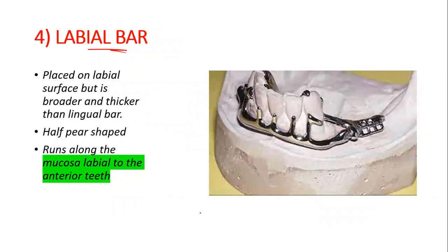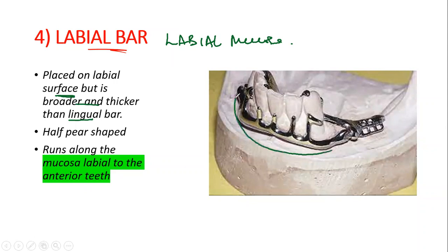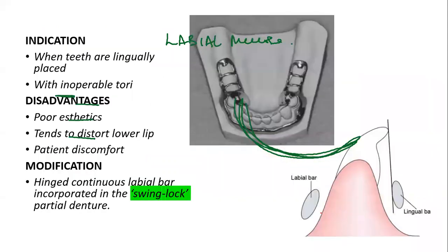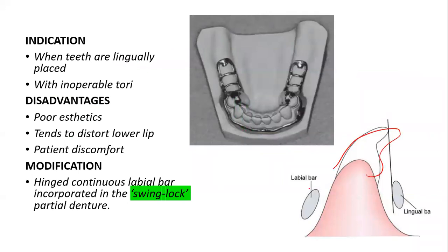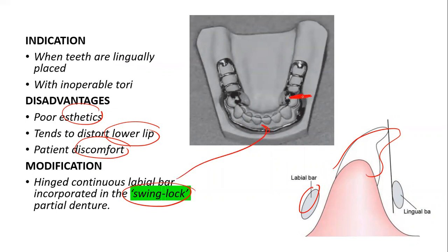The final connector is the labial bar. Unlike the others, it is placed on the labial mucosa — on the labial surface — and is broader and thicker than the lingual bar to maintain rigidity due to the greater external curvature. It is also half pear-shaped in cross-section and runs labial to the anterior teeth. It is indicated when the teeth are very much lingually placed. The problems are that it distorts the lower lip, is uncomfortable for the patient, and has poor aesthetics. A modification is the swing lock denture, which has a latch mechanism allowing you to open and close it after fitting.